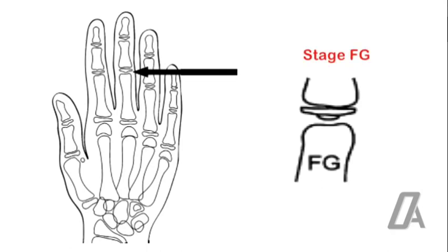Stage FG: the epiphysis is as wide as the metaphysis, and there is a distinct medial or lateral line of demarcation at right angles to the border. About 90% of individuals are one year before or at PHV.